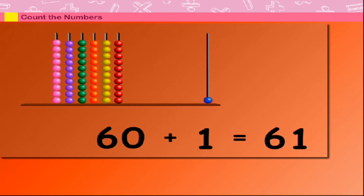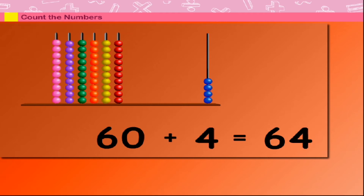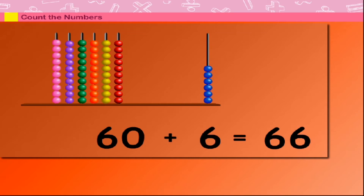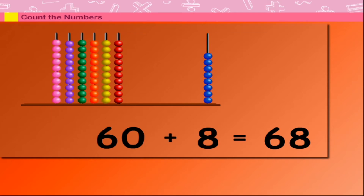60 plus 1 is equal to 61. 60 plus 2 is equal to 62. 60 plus 3 is equal to 63. 60 plus 4 is equal to 64. 60 plus 5 is equal to 65. 60 plus 6 is equal to 66.